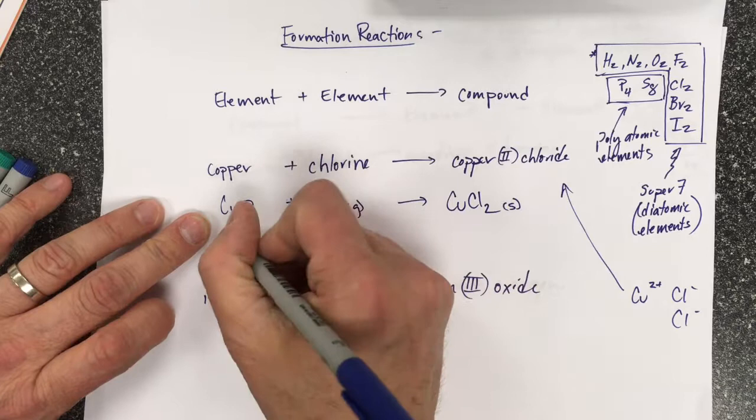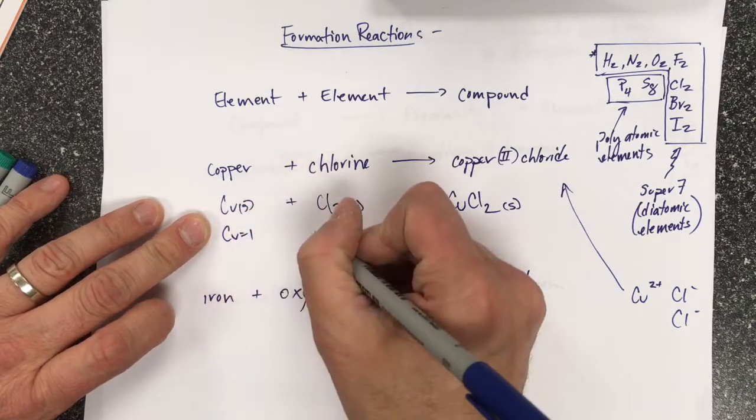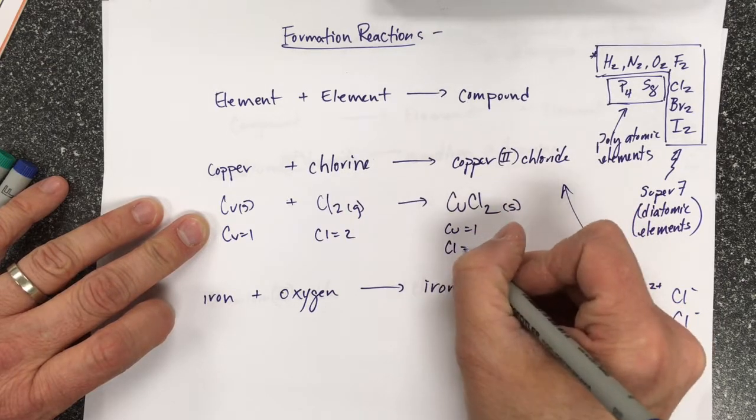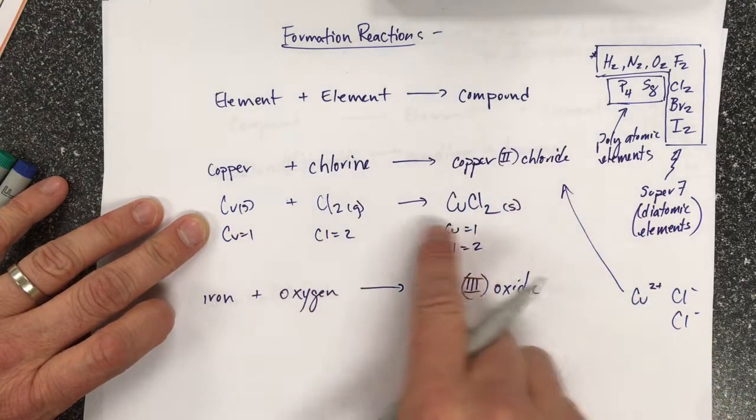This happens to be a balanced reaction because here I've got one copper and two chlorines. I have one copper and two chlorines. So it is balanced because I have the same number of each element in the reactants and products.